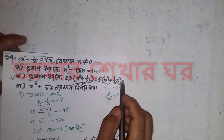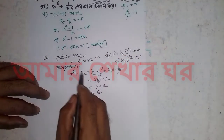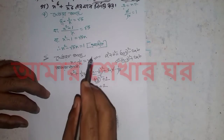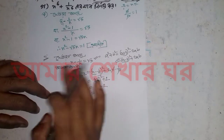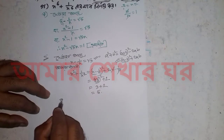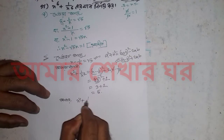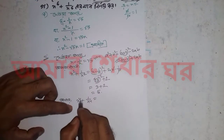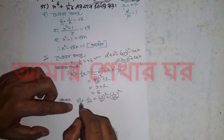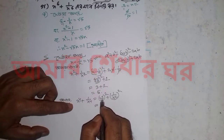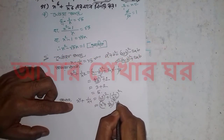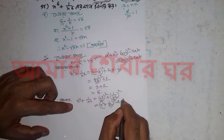Now I am going to put my x to the power 4 plus 1 by x to the power 4. x to the power 4 is equal to — using the formula: a plus b whole square minus 2ab.